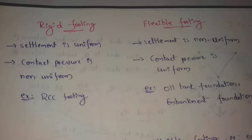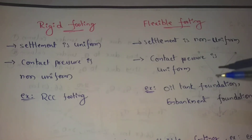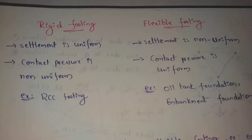Rigid footings are typically RCC footings. For flexible footings, examples include oil tank foundations and embankment foundations. This concludes the topic of contact pressure.